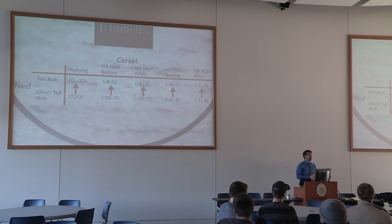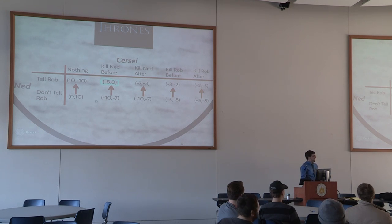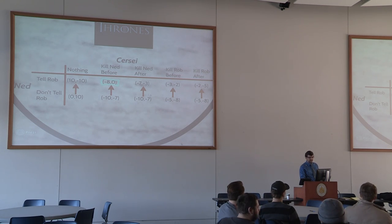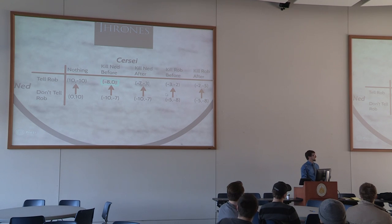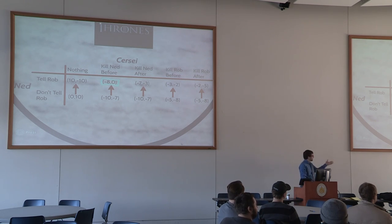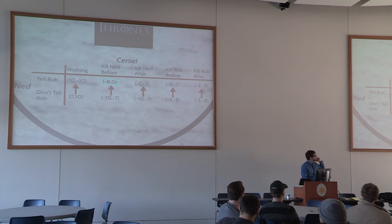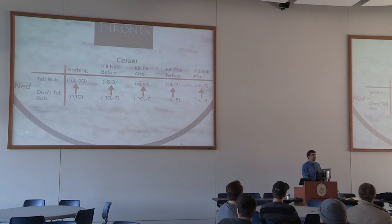Looking at the payoffs: the neutral option for Ned is to not tell Robb and for Cersei to do nothing — nothing changes. The best option gets a positive 10 — he tells Robb so he's not lying to his best friend, and Cersei doesn't do anything. The worst, negative 10, involves Ned being killed. For Cersei, her neutral option is killing Ned before he tells Robb. Her best option is Ned doesn't say anything. Her worst is if Ned tells Robb and she's done nothing. If Ned uses game theory, he really doesn't have a choice — all his payoffs point to telling Robb. For Cersei, the arrows point to taking Ned out. But notice the bottom-left option — the status quo, don't tell, don't do anything — is actually better for both of them. That's kind of a knock against dominance.